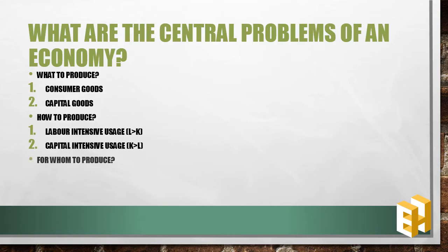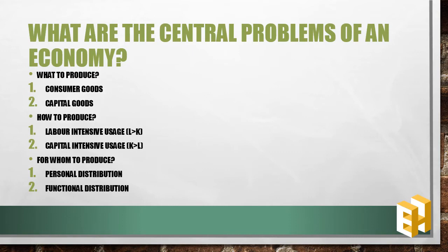Third is for whom to produce — either for personal distribution, i.e. for different individuals in a society, or for functional distribution, i.e. for different groups or factors of production like labor, capital, etc.